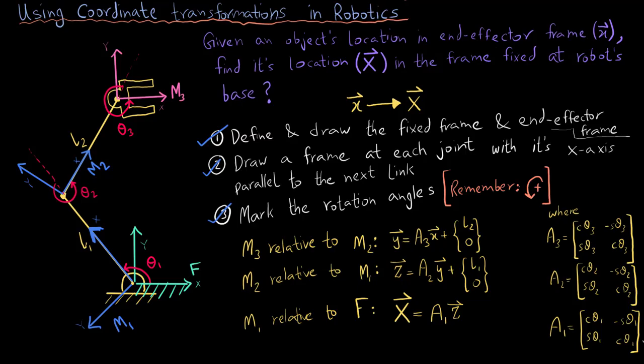I just want to bring your focus to this last equation. Notice that it is for the frame M1 with respect to the fixed frame F. Since their origins are coincident, there is no translation involved, it is a case of pure rotation and hence there is no displacement vector D.